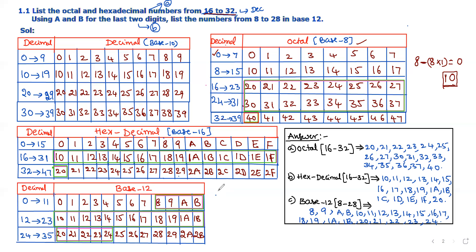From decimal 16 to 31, the hexadecimal values start at 10, because 16 divided by 16 gives quotient 1 and remainder 0, so decimal 16 equals hexadecimal 10. Continuing: 10 to 19, then 1A to 1F. From 32 to 47, the starting number is 20, continuing 20 to 29 and then 2A to 2F. In this way we can write any decimal number using the hexadecimal number system.